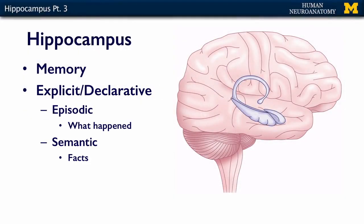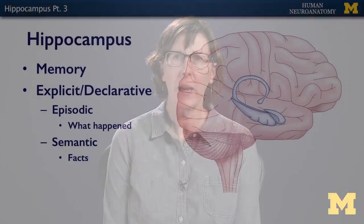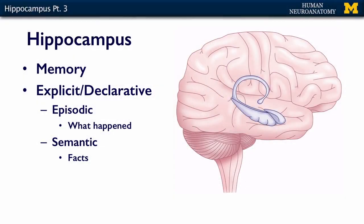There are two types of long-term memory. The first is explicit or declarative memory, and this has two subdivisions. Episodic memory — think of the episode of a TV show — is what happened. Semantic memory is explicit, declarative long-term memory that has to do with words or facts. So long-term explicit memory breaks down as: episodic is what happened, and semantic is the facts.